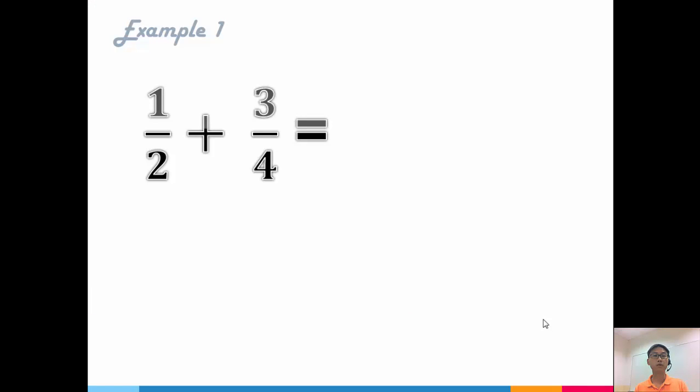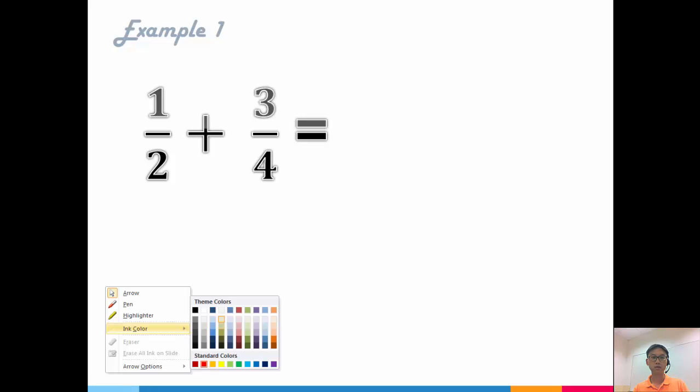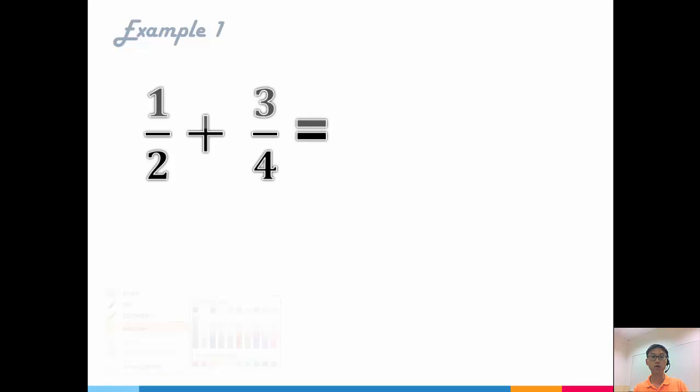Now let's look at an example. Let's say I have half plus 3 quarters, quite similar to the one I had just now. So let's see how to do this. Now if you want to, you can pause the video. You try to work it out on your own first before I move on.